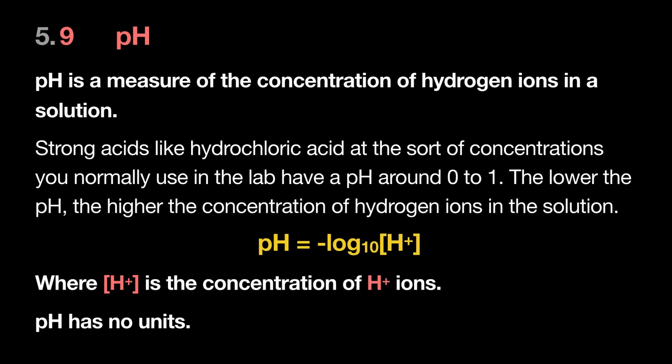Now we get to the new stuff — pH. pH is a man-made expression to describe the concentration of H⁺ ions in any solution. We need it because knowing just whether an acid is strong or weak, or concentrated or dilute, isn't enough — what ultimately matters is the actual H⁺ ion concentration. For example, if HCl gives 0.01 mol dm⁻³ H⁺ but ethanoic acid gives 0.02 mol dm⁻³ H⁺, I'd rather use the ethanoic acid solution.